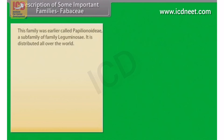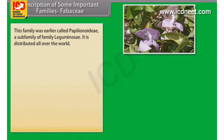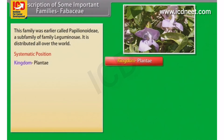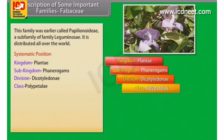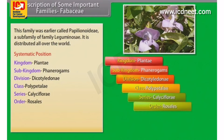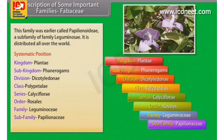Fabaceae. This family was earlier called Papilionidae, a subfamily of family Leguminosae, and is distributed all over the world. Systematic position: Kingdom Plantae, Subkingdom Phanerogams, Division Dicotyledoni, Class Polypetali, Series Calyciflorae, Order Rosales, Family Leguminosae, Subfamily Papilionoideae, Family Fabaceae.